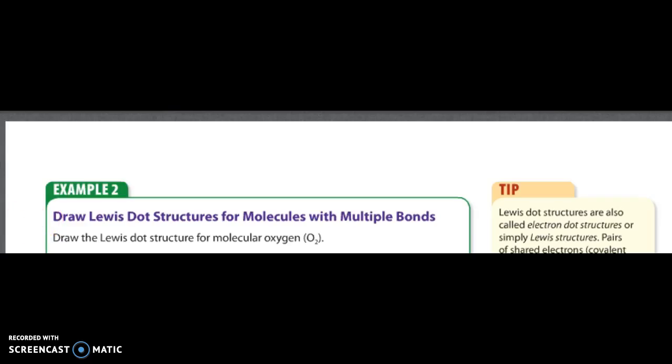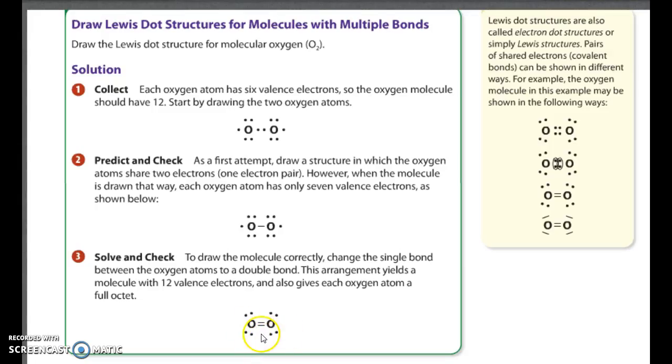And here's the next one for you to practice. Draw the Lewis dot structure for molecular oxygen, in other words O2. Hit the pause button. Each oxygen should have how many valence electrons around it? Six. Okay. And your answer will be like this. You will have a double bond between the oxygens. And each oxygen will have a pair of electrons towards the bottom and a pair towards the top.